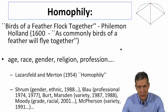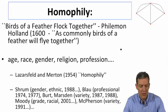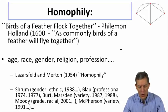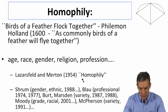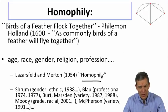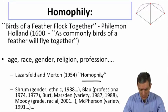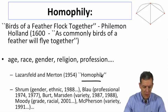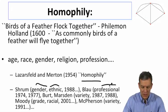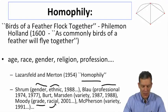Homophily has been looked at across a variety of different dimensions: age, race, gender, religion, profession. The term homophily itself was coined by Lazarsfeld, Merton in a 1954 paper, and it's really been documented across many different studies — studies of gender and ethnicity, profession, grade and race in schools — a whole series of different attributes.